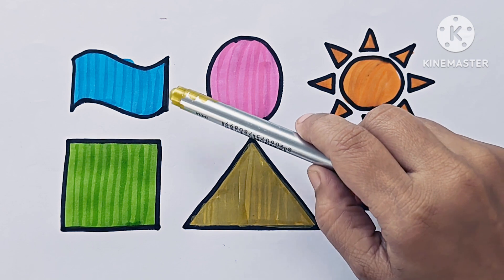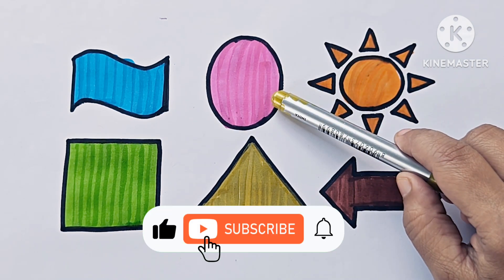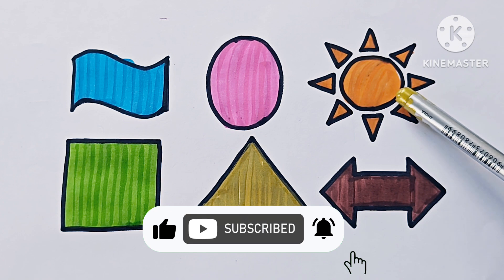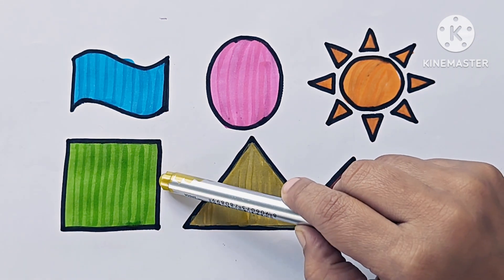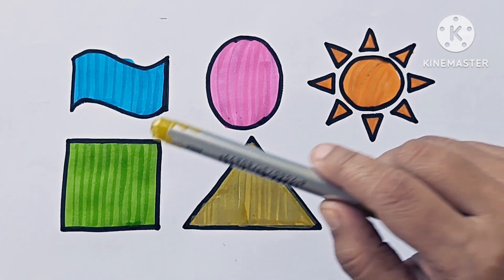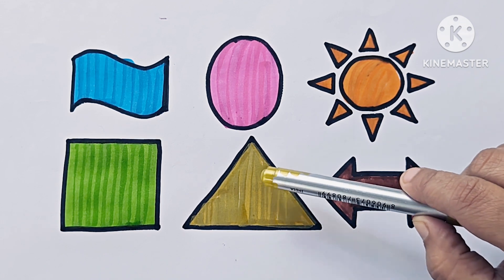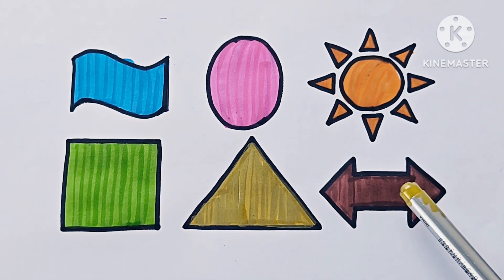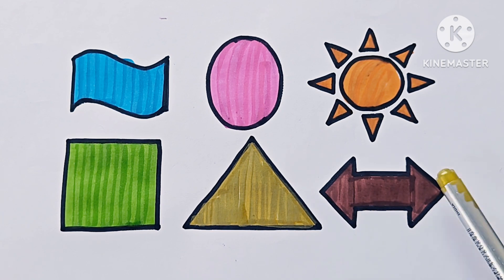This shape is wave. This is oval. Oval has no sides. This is sun. This is a shape. This is square. Square has four sides, four angles, four vertices. This is triangle. It has three sides, three angles, three vertices. This is a symbol. This is left, right arrow.